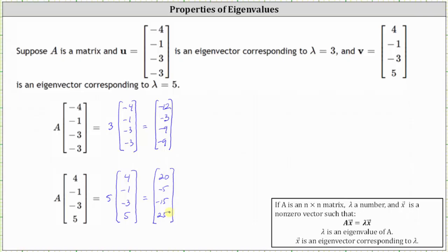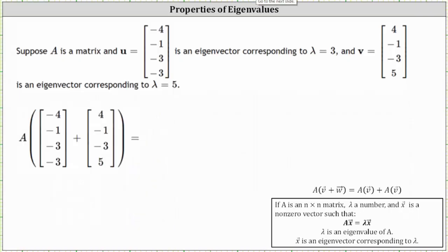For the second part of the question, we're asked to find matrix A times the sum of the eigenvectors vector U and vector V. Because matrix A times vector X represents a linear transformation, we can use the linearity property shown here to determine matrix A times the sum of the two eigenvectors.